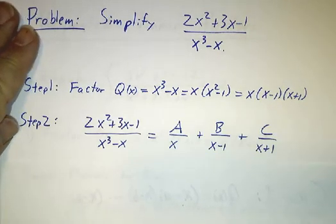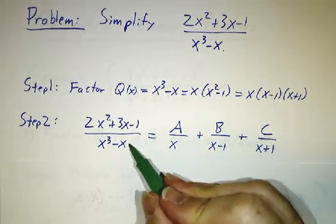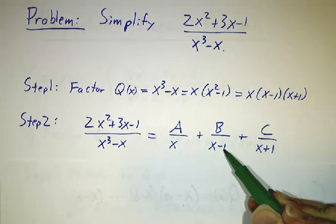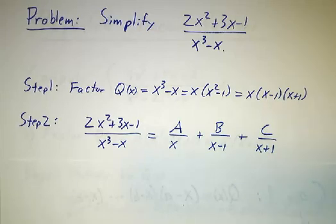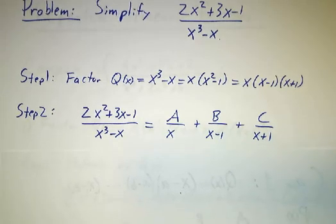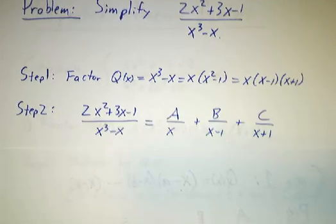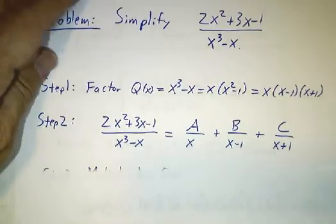So great. The next step is to write your ratio as a sum of terms. It's something over x plus something over x minus 1 plus something over x plus 1. We need to figure out what are the constants A, B, and C.